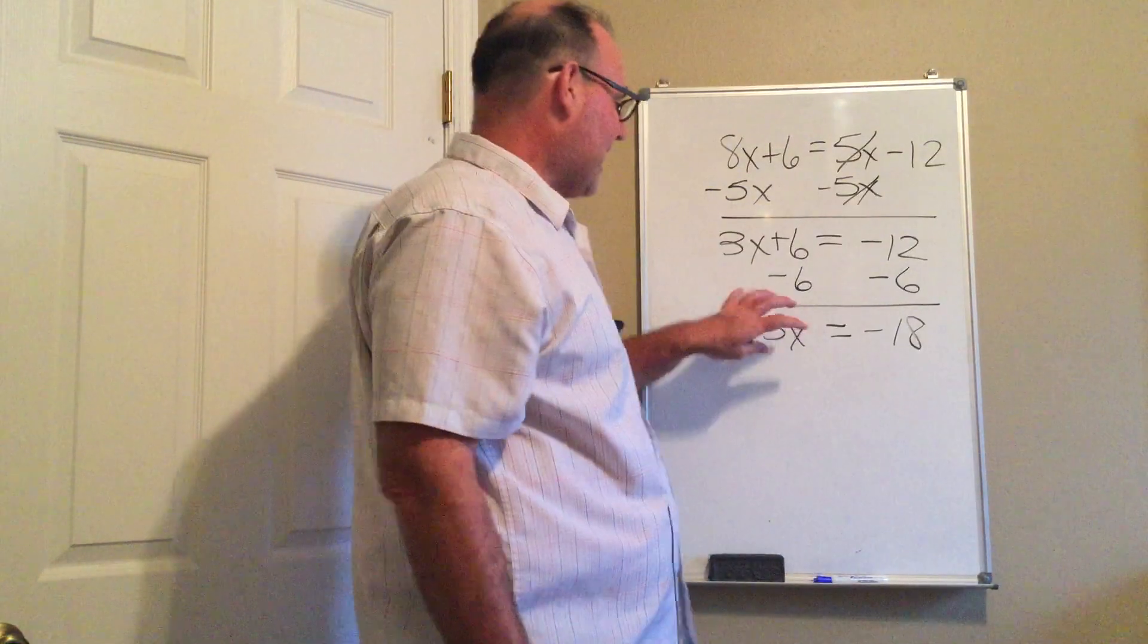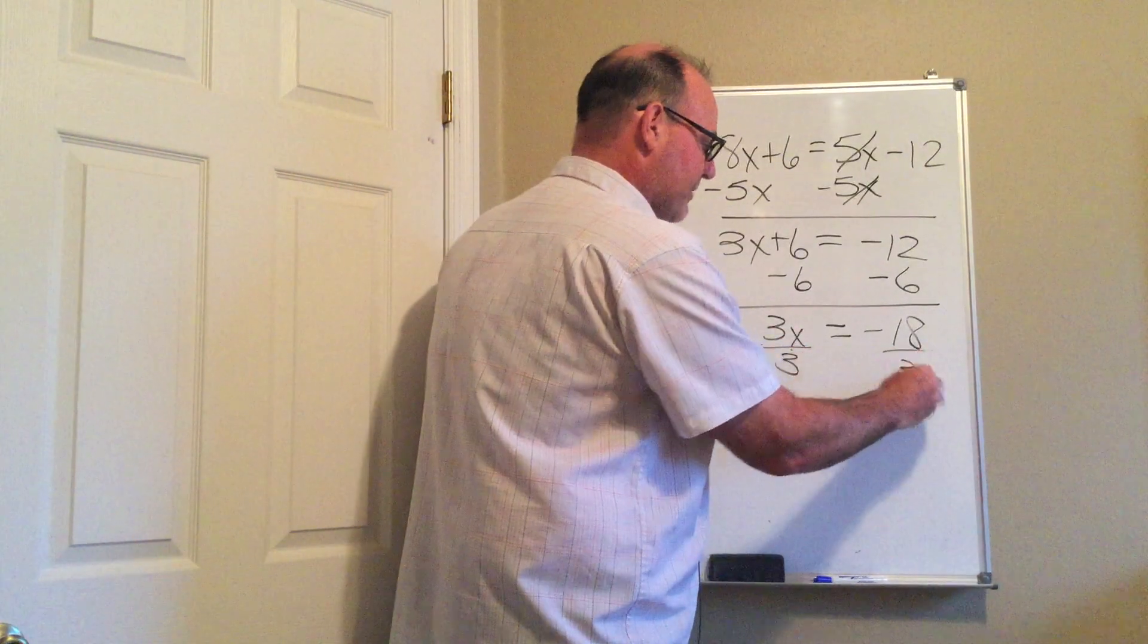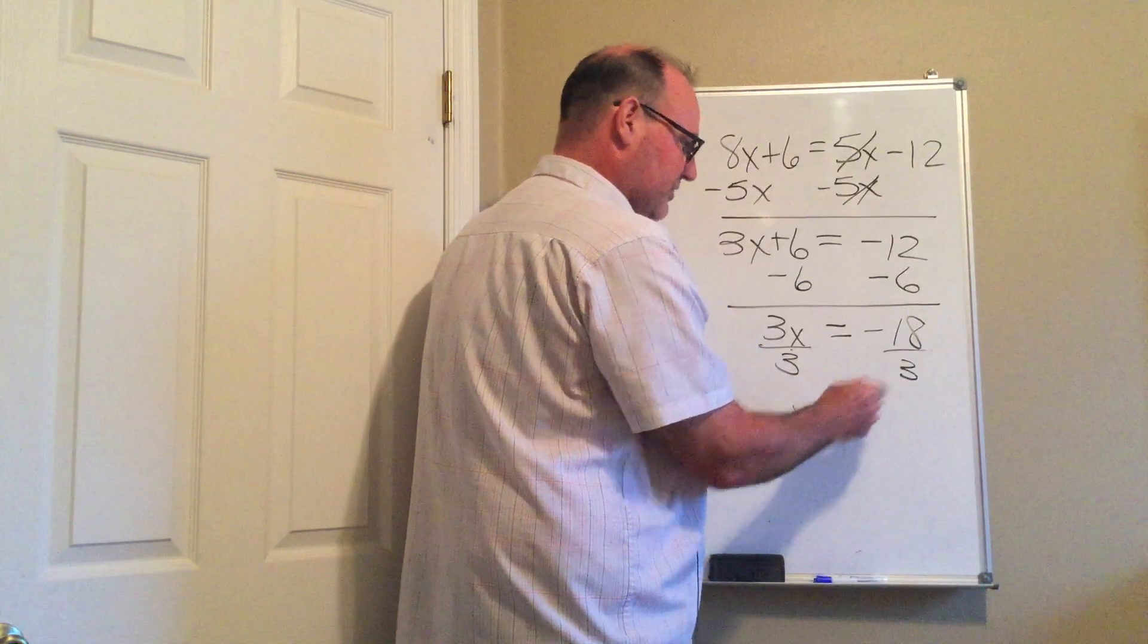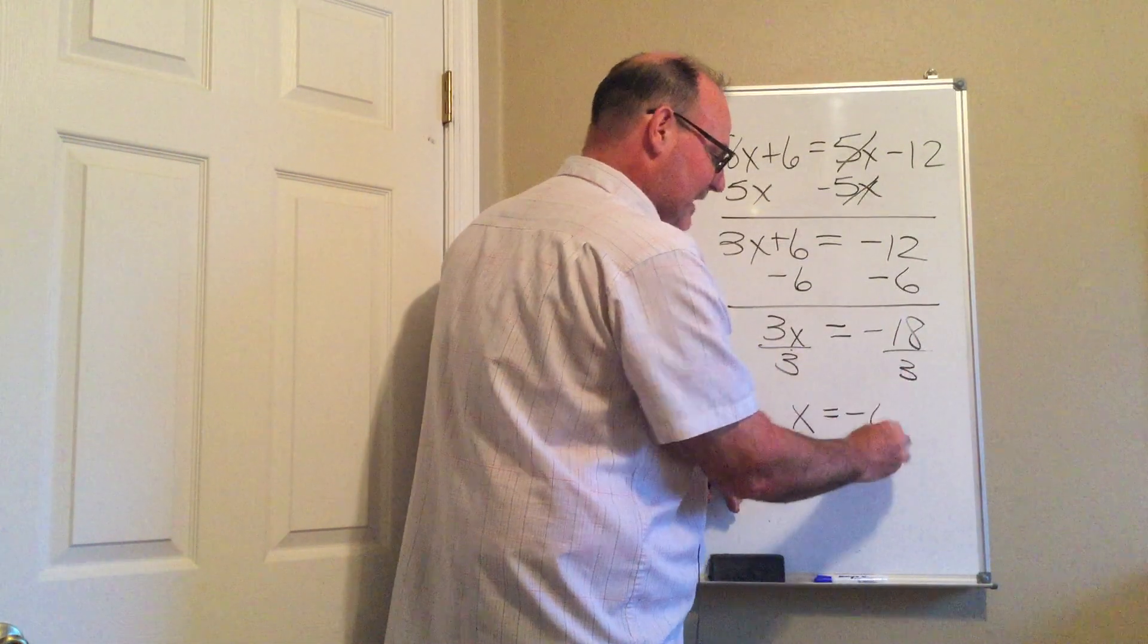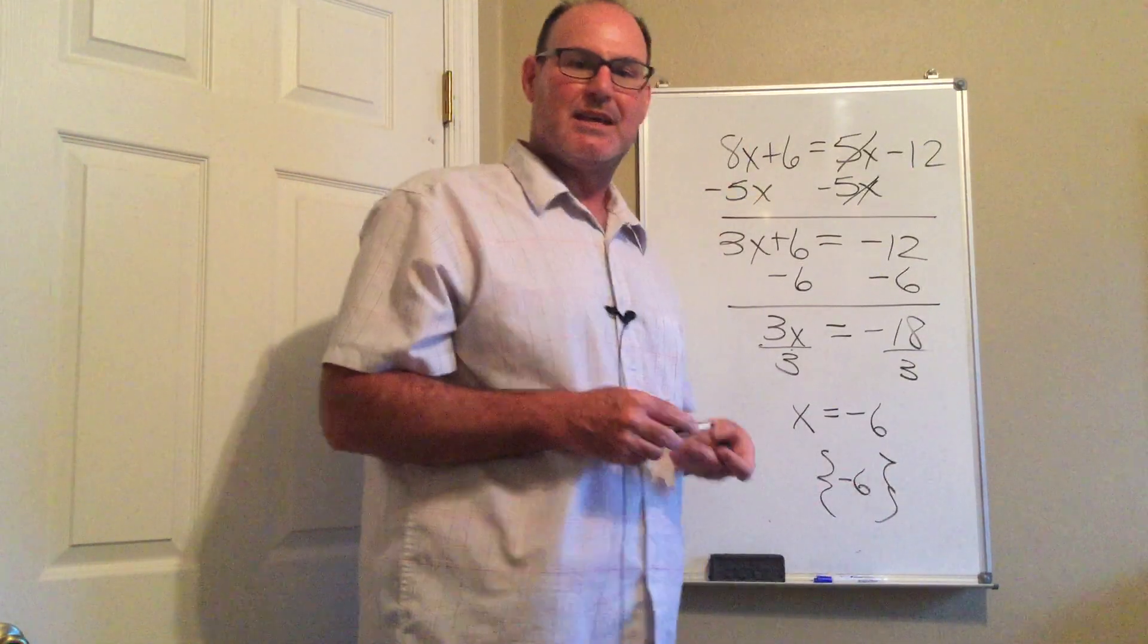And last but not least, now that I have my X term by itself, I am going to divide both sides by 3. X is equal to negative 18 divided by 3 is negative 6. And there's my solution set, it's the set that contains negative 6.